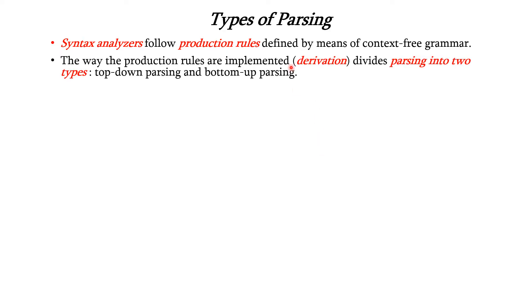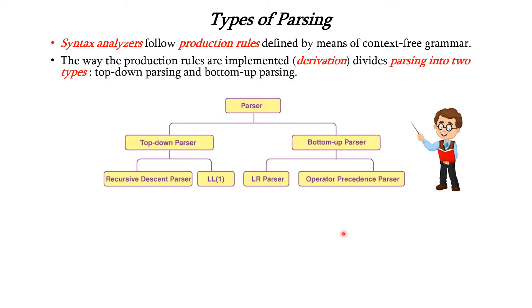The way the production rules are implemented through derivation divides the parsing into two types: top-down parsing and bottom-up parsing. Here is the diagram which illustrates the types of parsers.